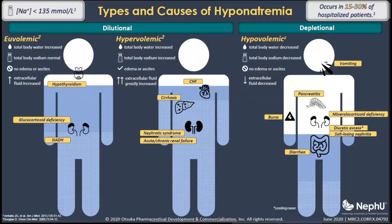And secondly, we can see inappropriately concentrated urine with an osmolality greater than 200 milliosmoles per liter. This is where we can see a failure of the body to excrete water in a normal fashion, and here is where we can further classify hyponatremia into three categories.